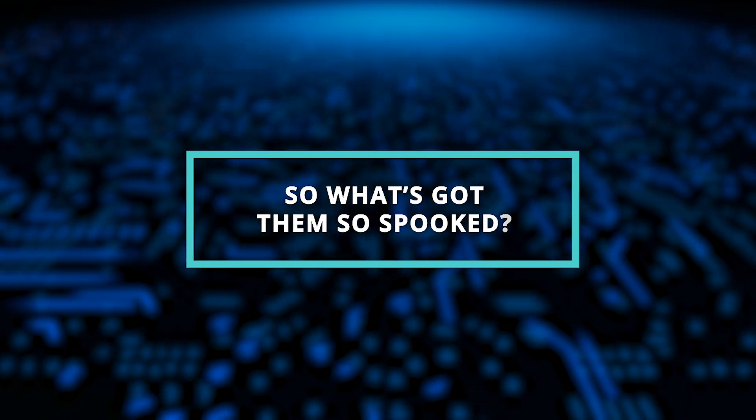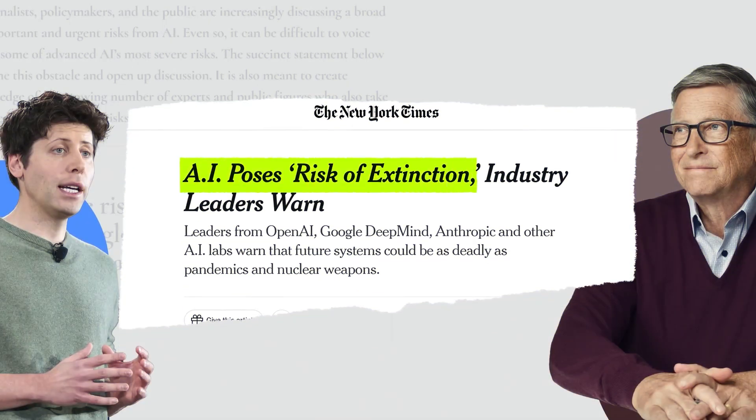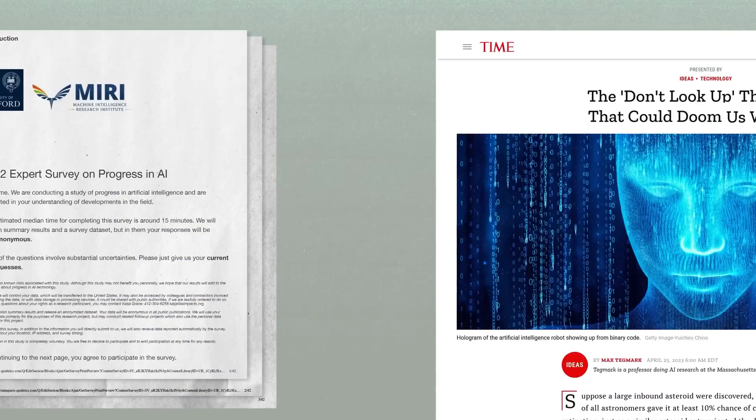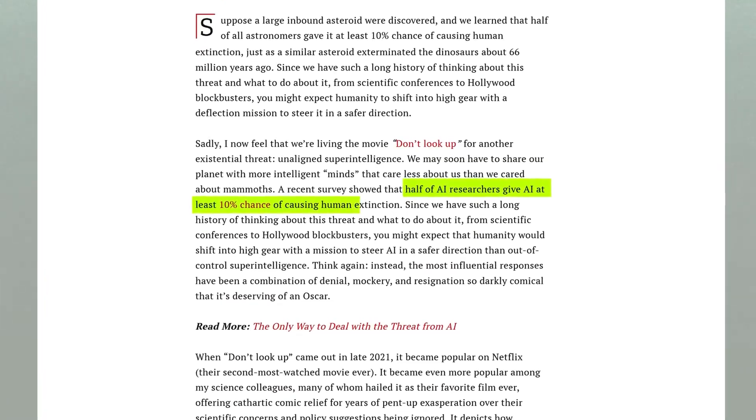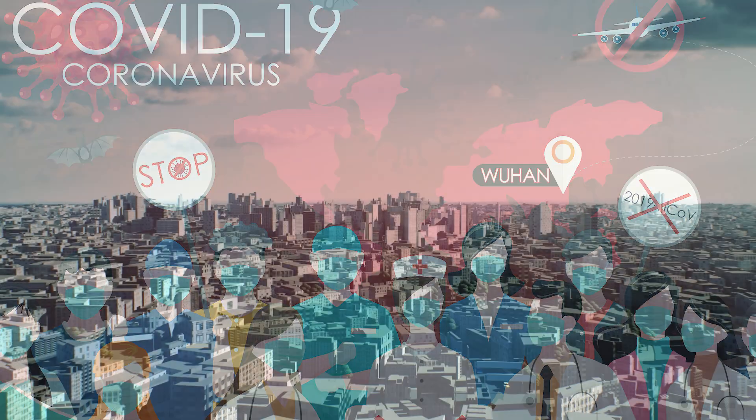So what's got them so spooked? Well, in their own words, they believe that mitigating the risk of AI actually driving humanity to extinction needs to become a global priority alongside other societal-scale risks, such as pandemics and nuclear war.